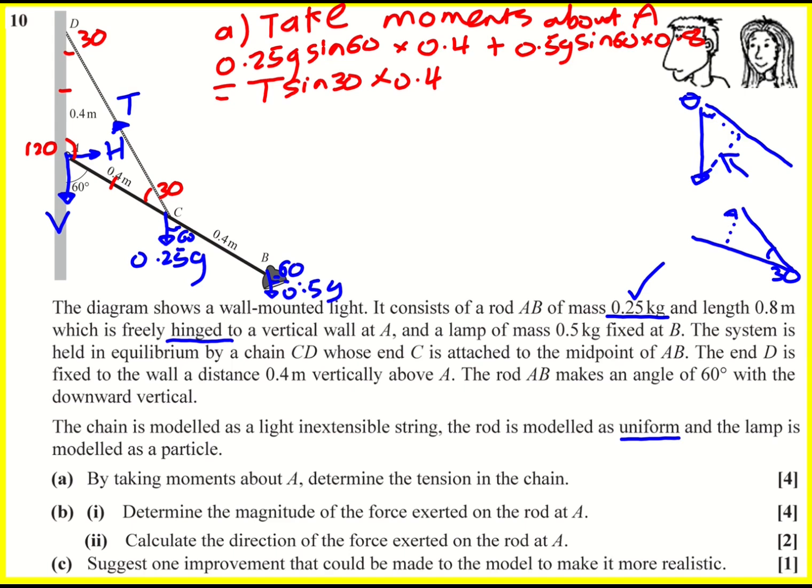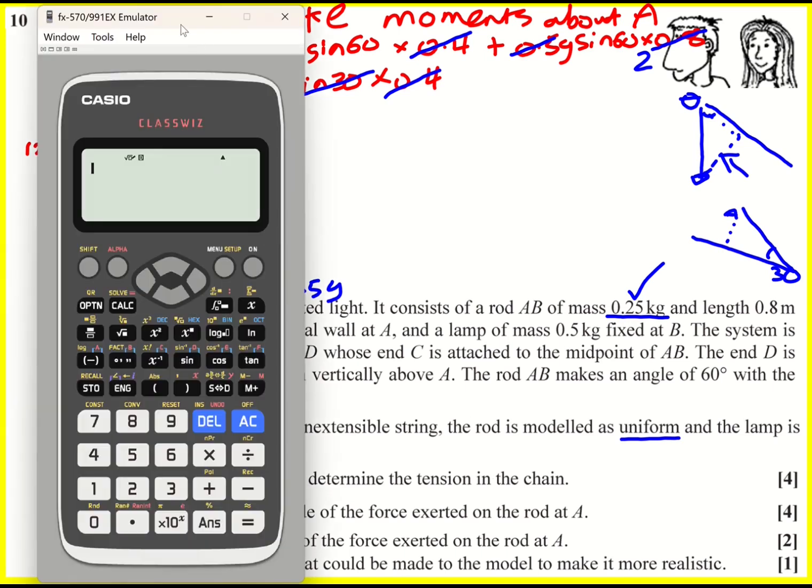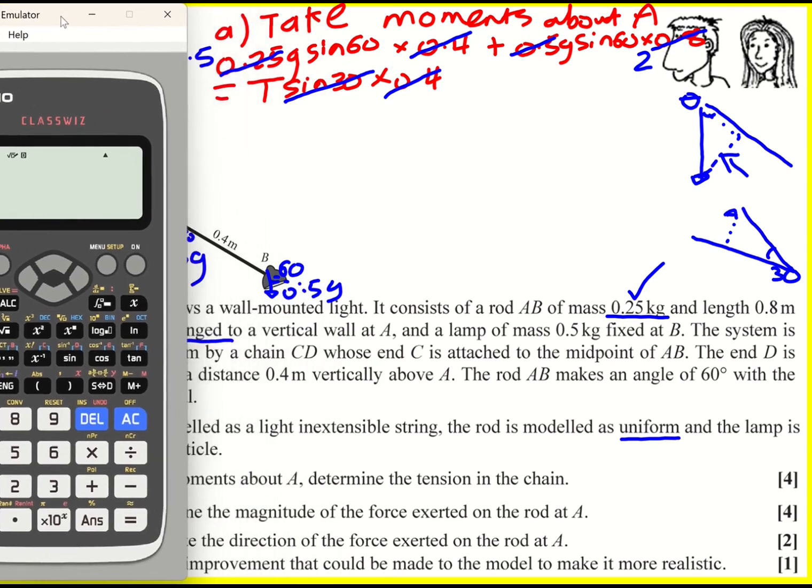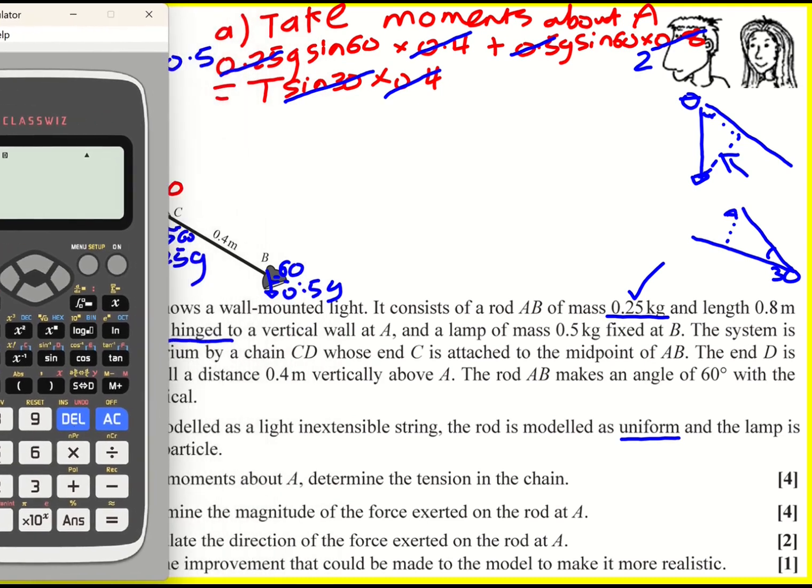Now we're ready to calculate T. There are a couple of shortcuts we can use. Actually, if we divide through by 0.4, then this will go, this will go, and this will become 2. And sine 30 is actually a half. So I could just times through by 2 essentially, or divide through by sine 30. And then this 0.5 is going to go. When I divide by 0.25, I'm going to be left with 0.5. So that's just a much quicker calculation at this point. Okay, if you don't spot that, or don't like the idea of doing that, then no problem whatsoever. Just make sure you carefully put it in your calculator.